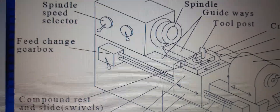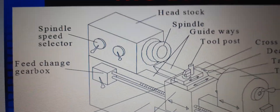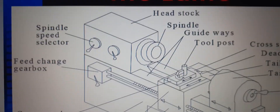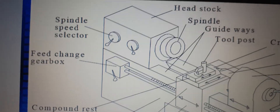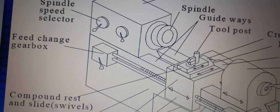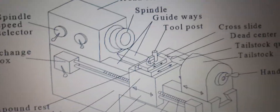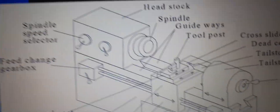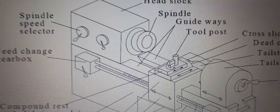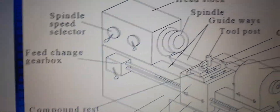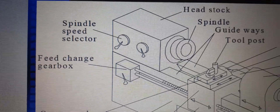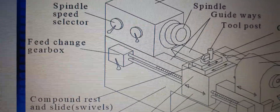The headstock, which you can see in the sketch, provides drive motion for the job through the headstock spindle. The headstock houses the entire driving mechanism including the cone pulley, back gear mechanism, and change gears for screw cutting operations.